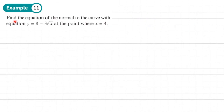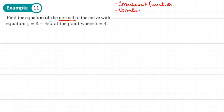Example 11: find the equation of the normal to the curve y equals 8 minus 3 root x at the point where x equals 4. The steps are: first, find the gradient function — the derivative. Then find the gradient when x equals 4.